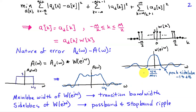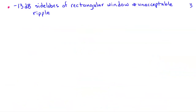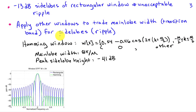The main lobe width of w has a big effect on the transition bandwidth, while the side lobes of w affect the pass band and stop band ripple. Most of the time, the minus 13 dB side lobes of the rectangular window lead to an unacceptable level of ripple in both the pass band and the stop band. We typically use other windows to trade main lobe width—the transition band—for lower side lobes, that is, lower ripple.